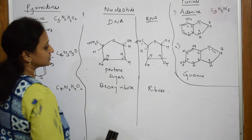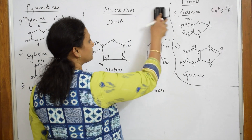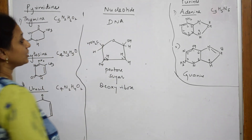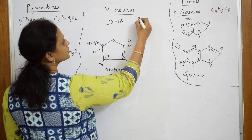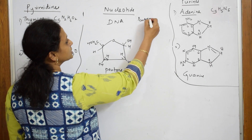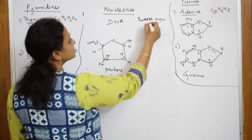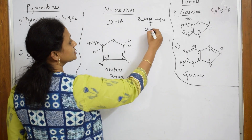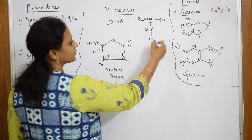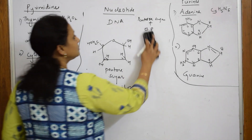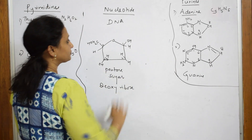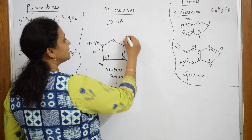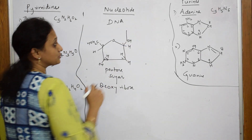Remember this important difference. Now, you also need to remember where these base pairs are linked. A nucleotide is a combination of pentose sugar — which I have drawn — along with base pairs and phosphate. By condensation, I will see the water molecule is eliminated, and here you have a base pair linking.